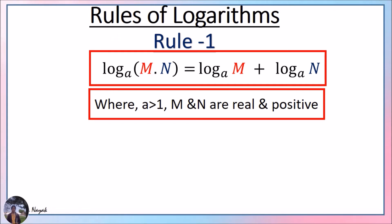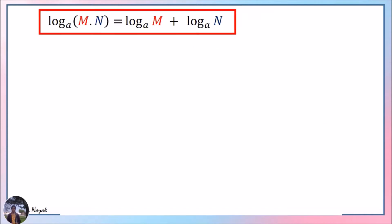Now we will go over some rules of logarithm before going to the differentiation rules. Rule 1: log base a of (m × n) equals log base a of m plus log base a of n, where a is greater than 1, and m and n are both real and positive. Logarithm is defined only for positive values, so m and n will always be positive. Let us prove this rule using exponents.